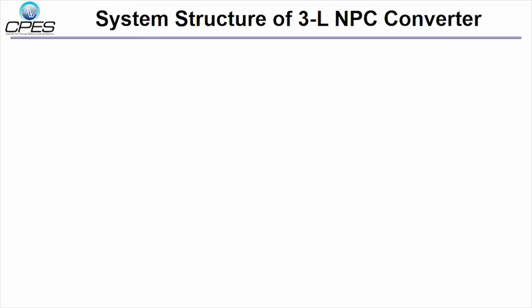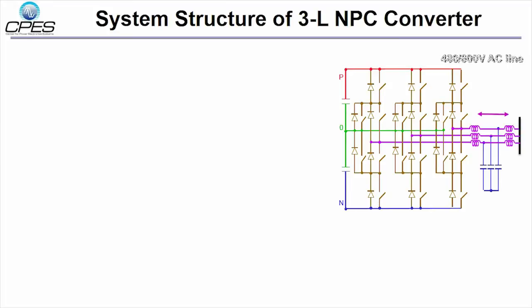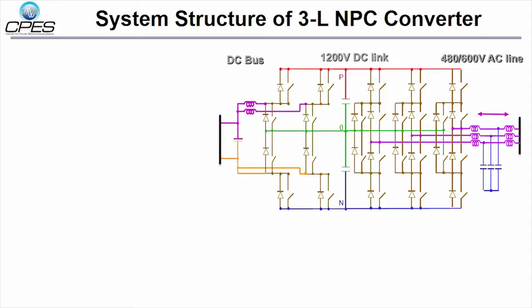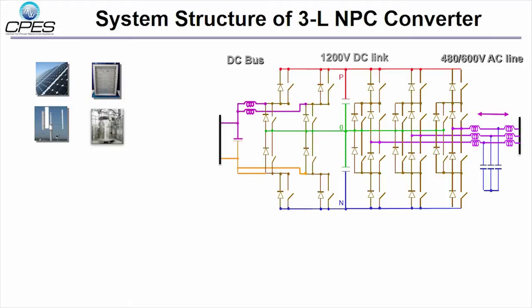First, let me briefly review the system structure for this power conversion system. The DC-AC converter provides bidirectional power flow between the 480V utility grid and 1200V DC link. The DC-DC converter connects the DC bus which can be different renewable energy, energy storage system, or nano grid system.